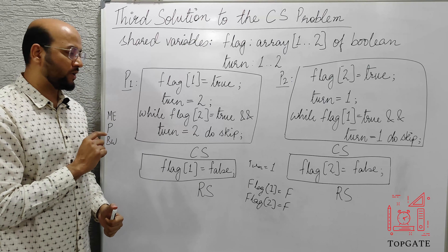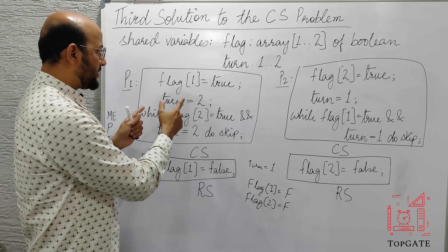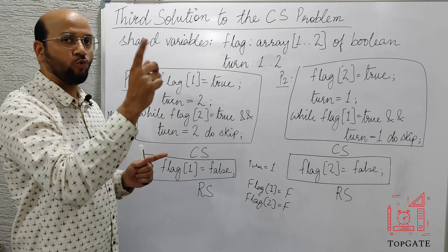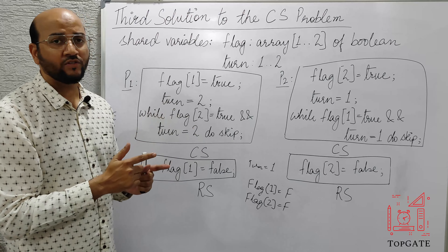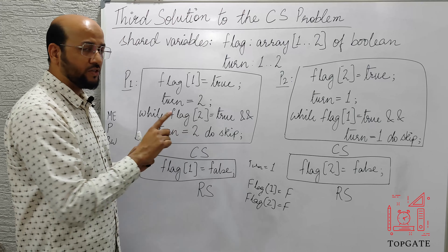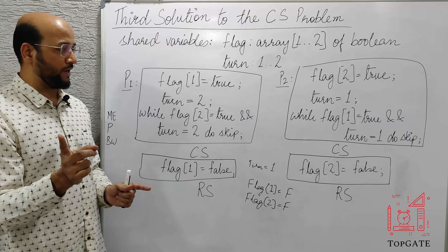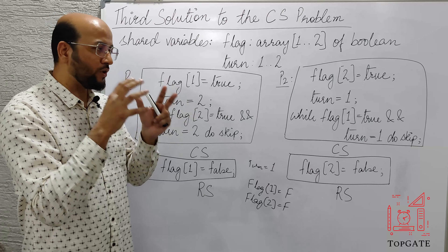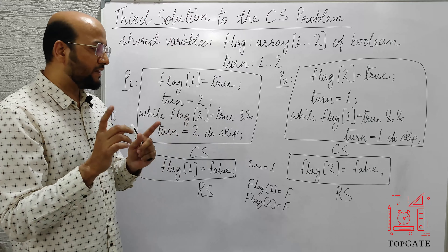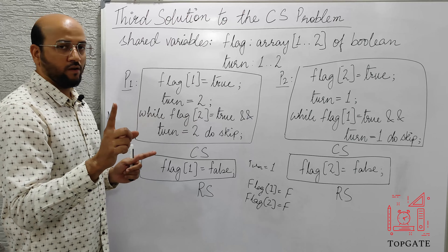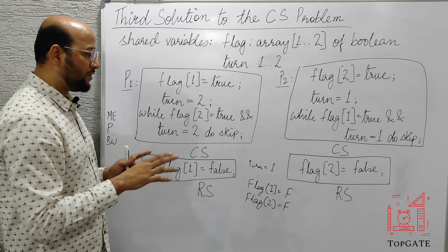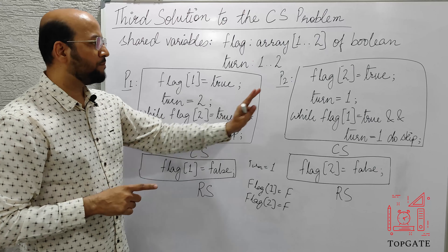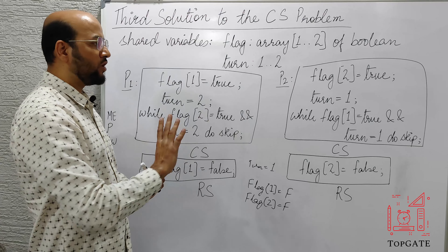For satisfying the mutual exclusion condition, we will take two situations. In the first situation, P1 comes first and when P1 is working in the critical section, at that moment P2 comes. We will see whether P2 can also go to the critical section. If both can be in the critical section simultaneously, then mutual exclusion is not satisfied. In the first situation, only P1 is willing to go to the critical section; P2 is not in the scene at all.